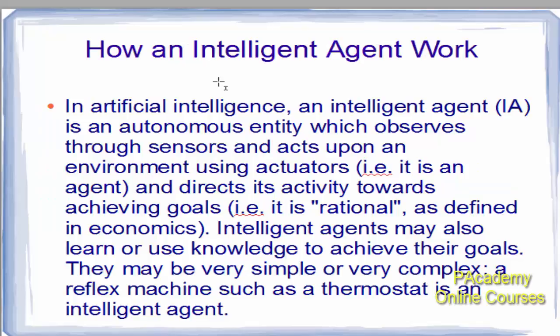How does an intelligent agent work? In artificial intelligence, an intelligent agent is an autonomous entity which observes through sensors and acts upon an environment using actuators. It directs its activity towards achieving goals and is rational, as defined in economics. Intelligent agents may also learn or use knowledge to achieve their goals.